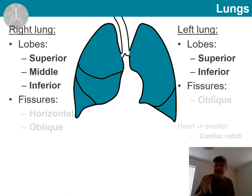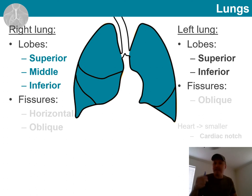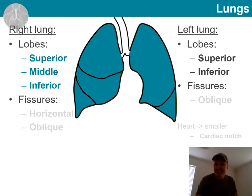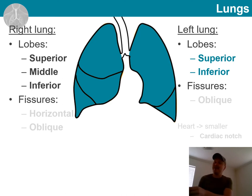On the right side, where the lung is bigger, we have three lobes. On the left, where we have the smaller lung, we have only two lobes. The lobes on the right side are, from top to bottom: superior, middle, and inferior lobes. On the left, we have superior and inferior lobes.